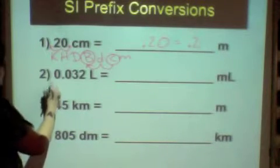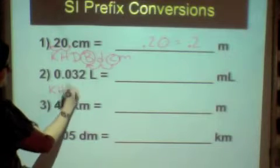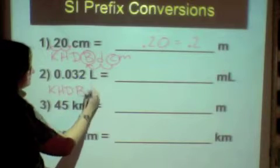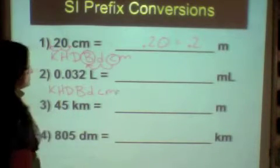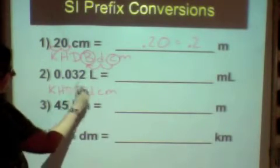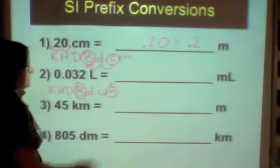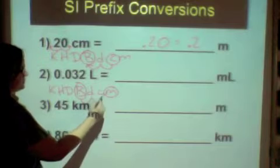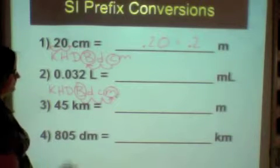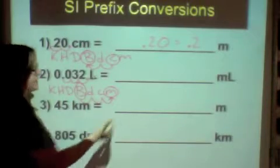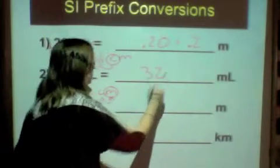Okay? So, the next one. King Henry died by drinking chocolate milk. L is a base because it's a single letter. ML means we're going to the M. So, we're going to go one, two, three times to the right. So, we're going to do the same thing to the decimal. One, two, three times to the right, and you should get 32.